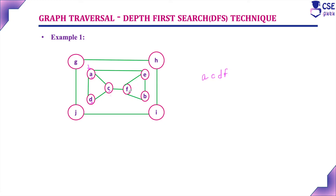Next, consider the adjacent unvisited vertex to F, that is B and E. Break the tie and visit B. Next, consider the adjacent unvisited vertex to B, that is E. Next, consider the adjacent unvisited vertex to E — no adjacent unvisited vertices. So this graph traversal is complete.